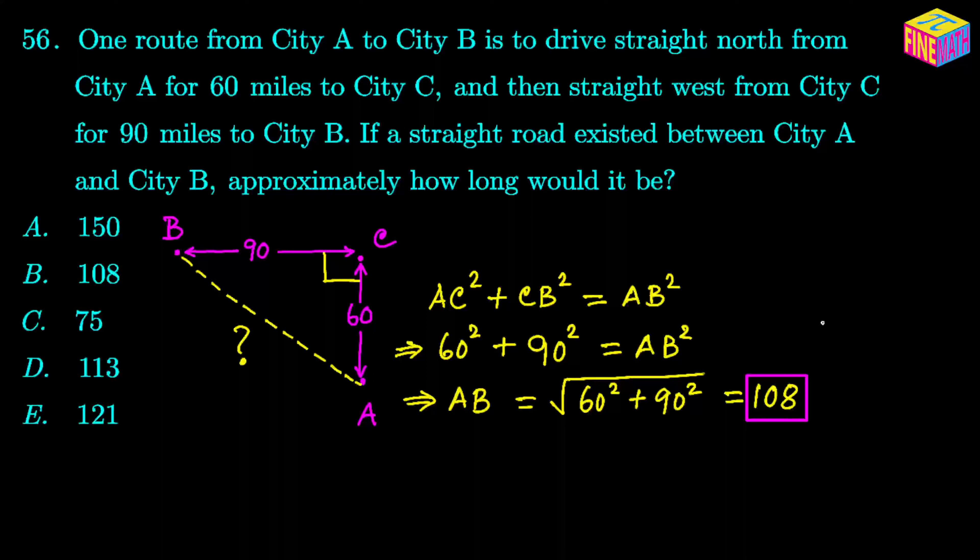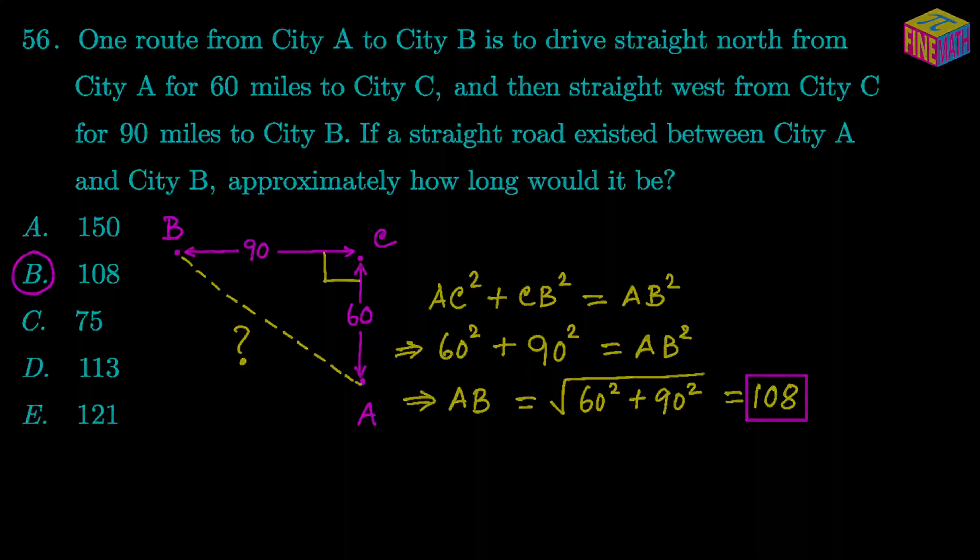So if there was a straight road connecting the two cities A and B, the length would be approximately 108 miles. If you look at the answer options, we have 108 under option B. So option B is the correct answer. I hope everything made sense. Thank you for watching. See you in the next video.